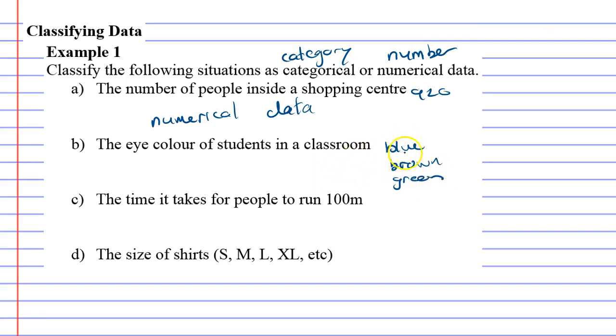They're not numbers, they're categories, so categorical data. The time it takes for people to run a hundred meters.